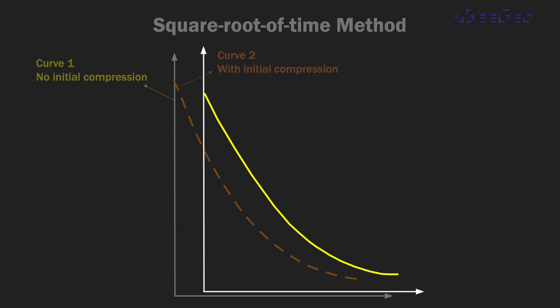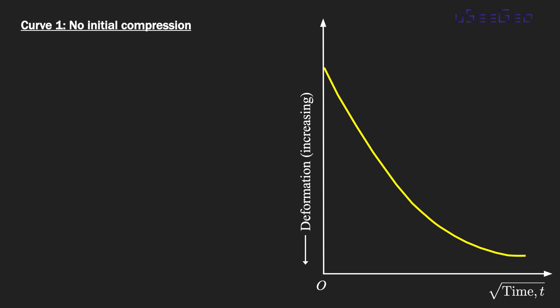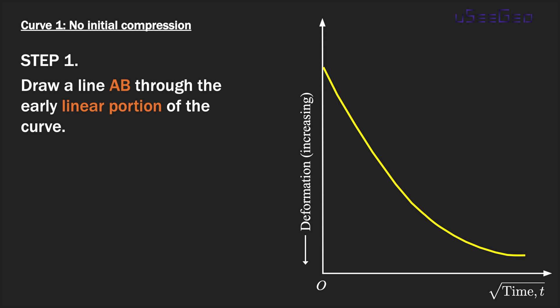Let's focus on the first one, curve number one, where there's no initial compression. The first step is to draw a line AB through the early linear portion of the curve. So fit a straight line through the early linear portion.